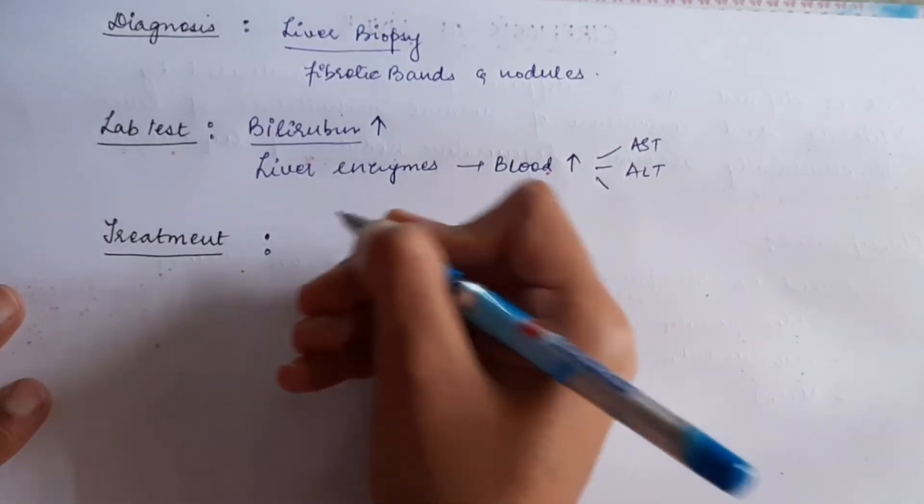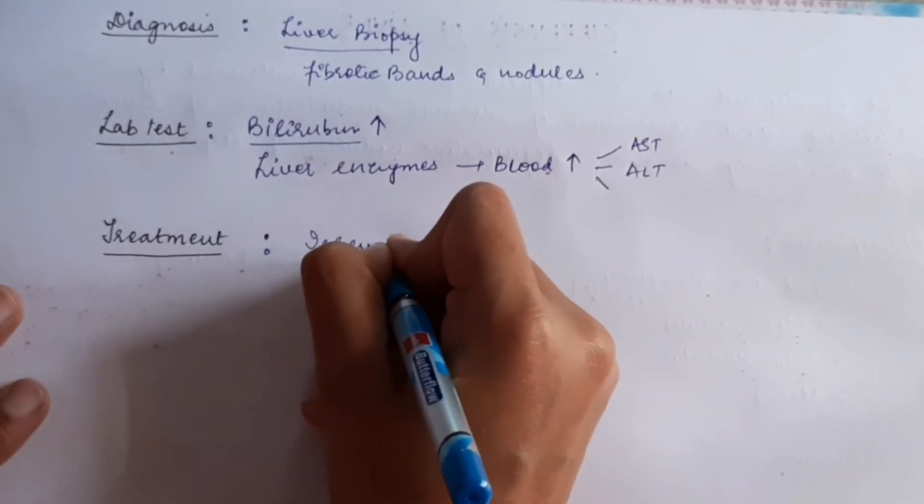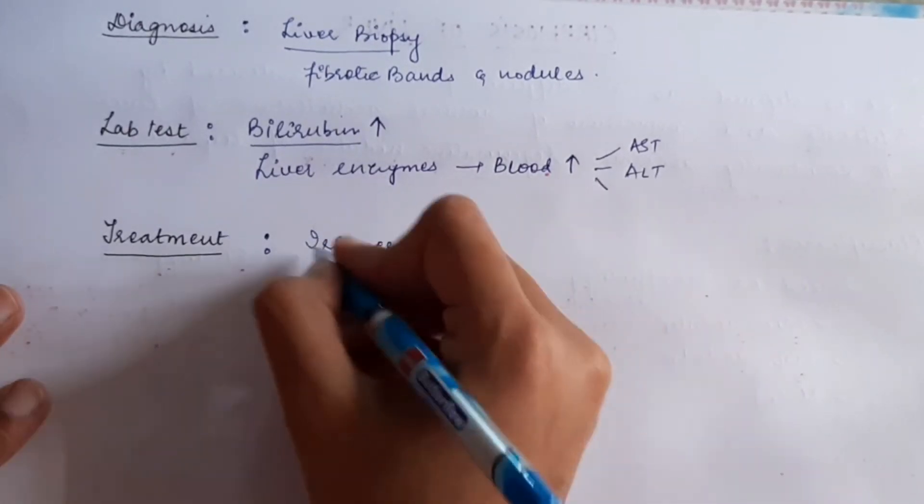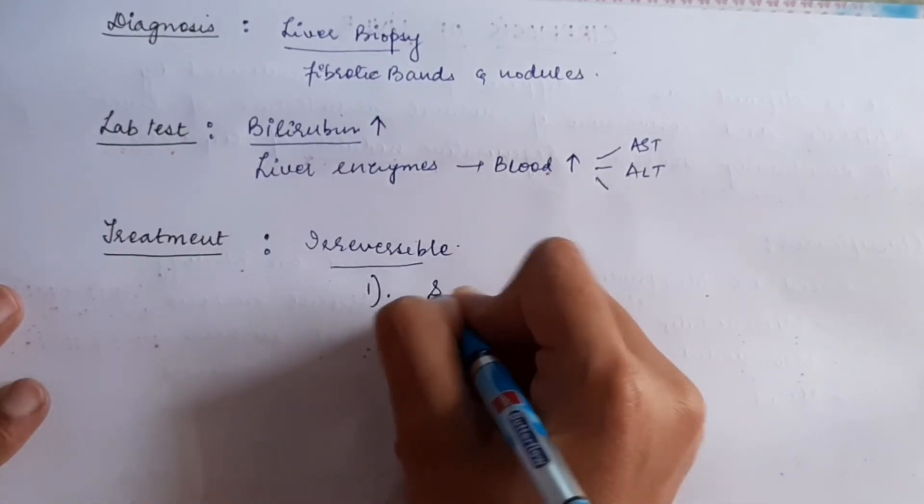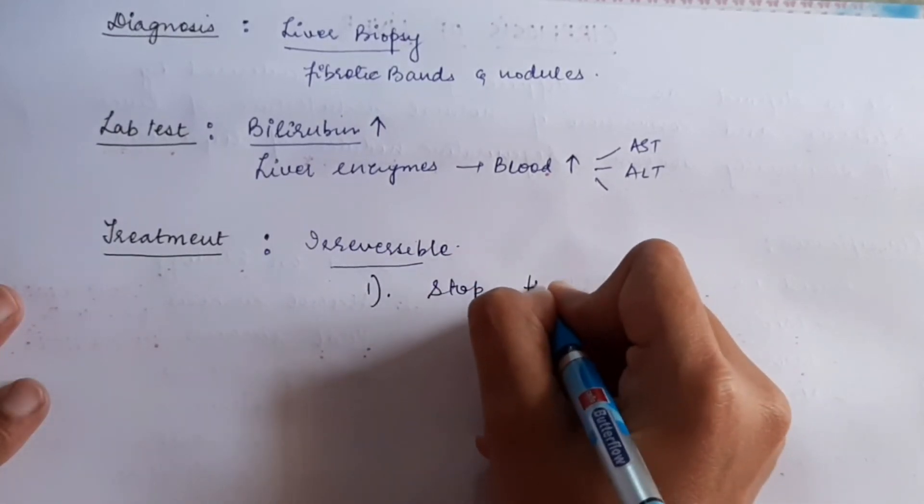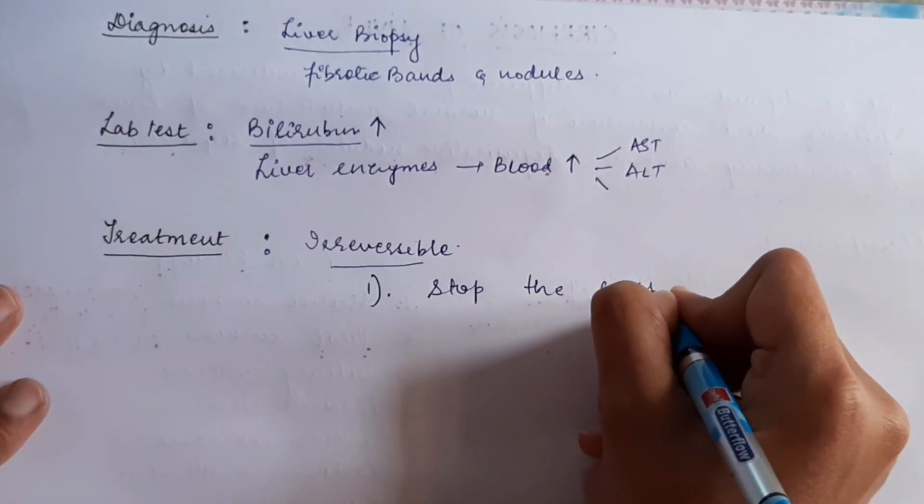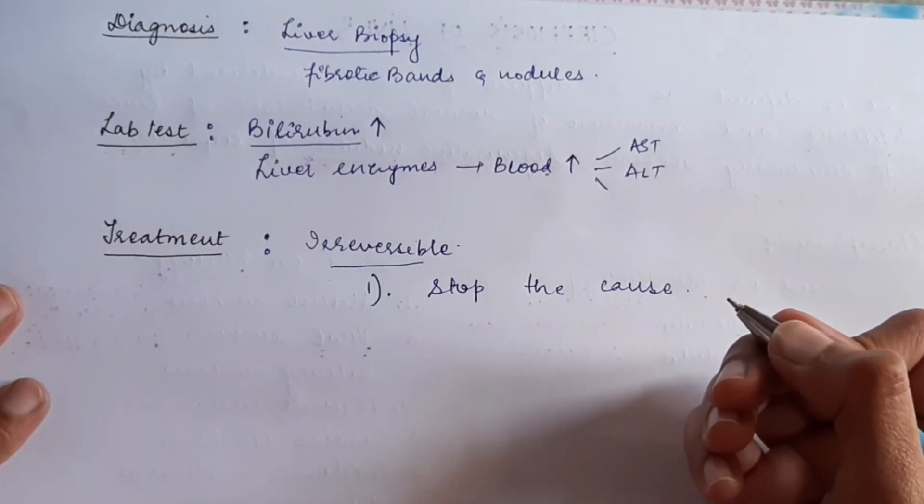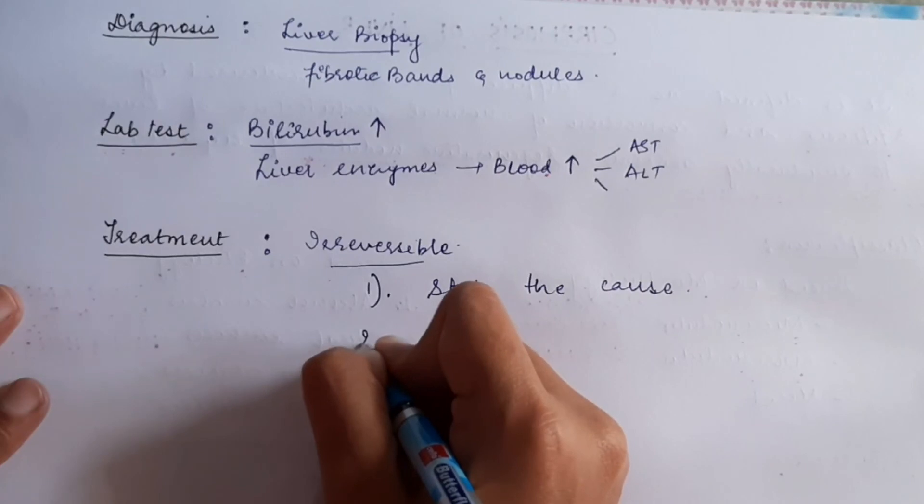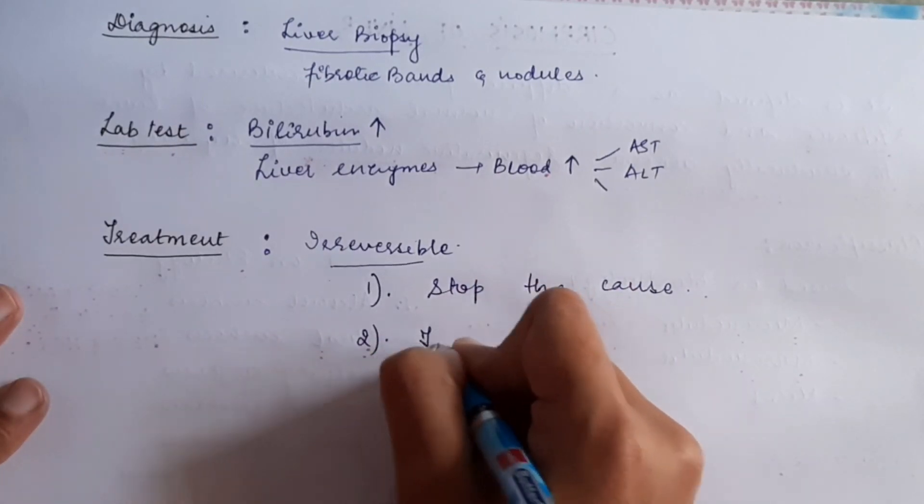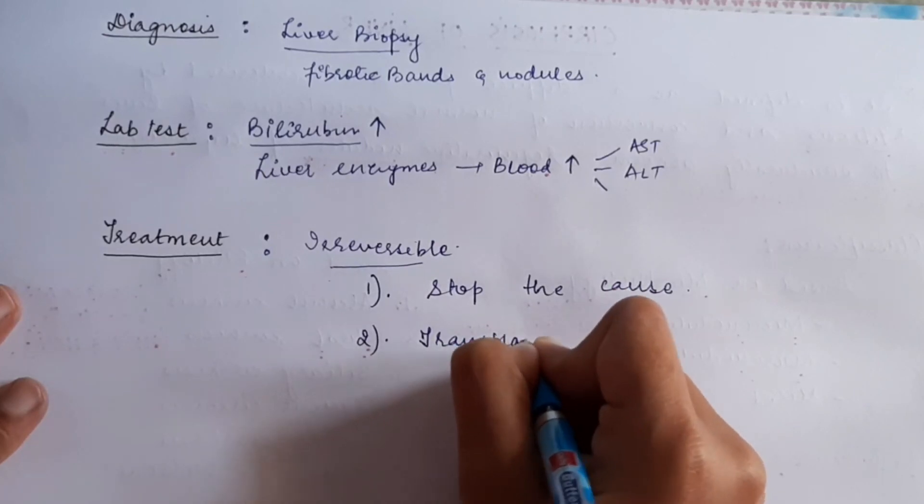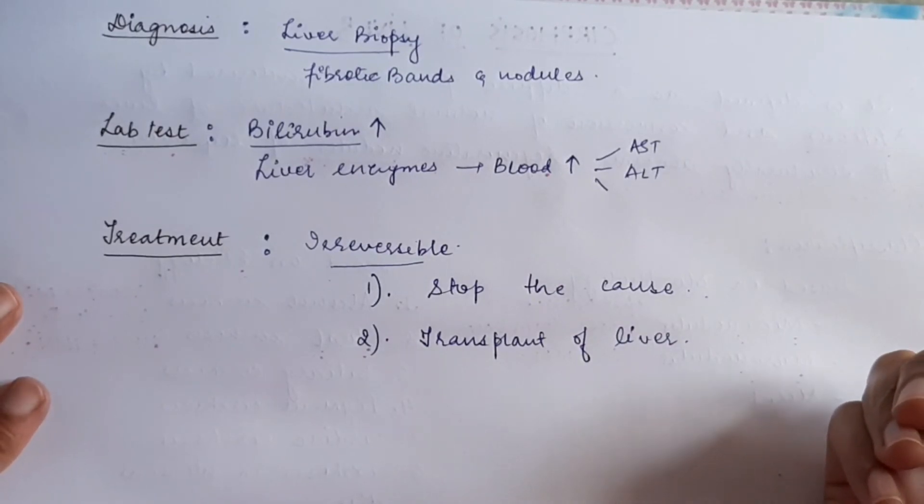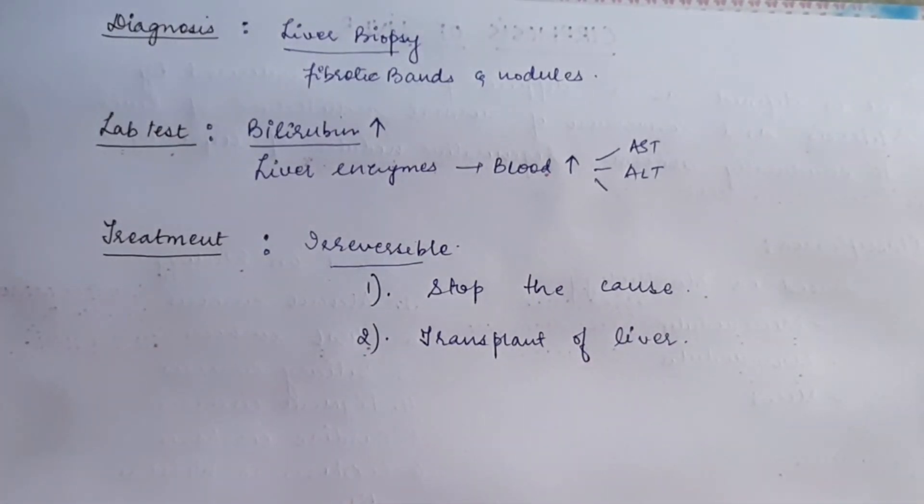And now, if we look at the treatment, first of all, this is an irreversible condition. The damage once done cannot be reversed back to normal. First, we can try to stop the cause, like if the person is consuming alcohol, we can stop its use. If the person has hepatitis infection, we can treat that. And the other possible treatment is liver transplant.